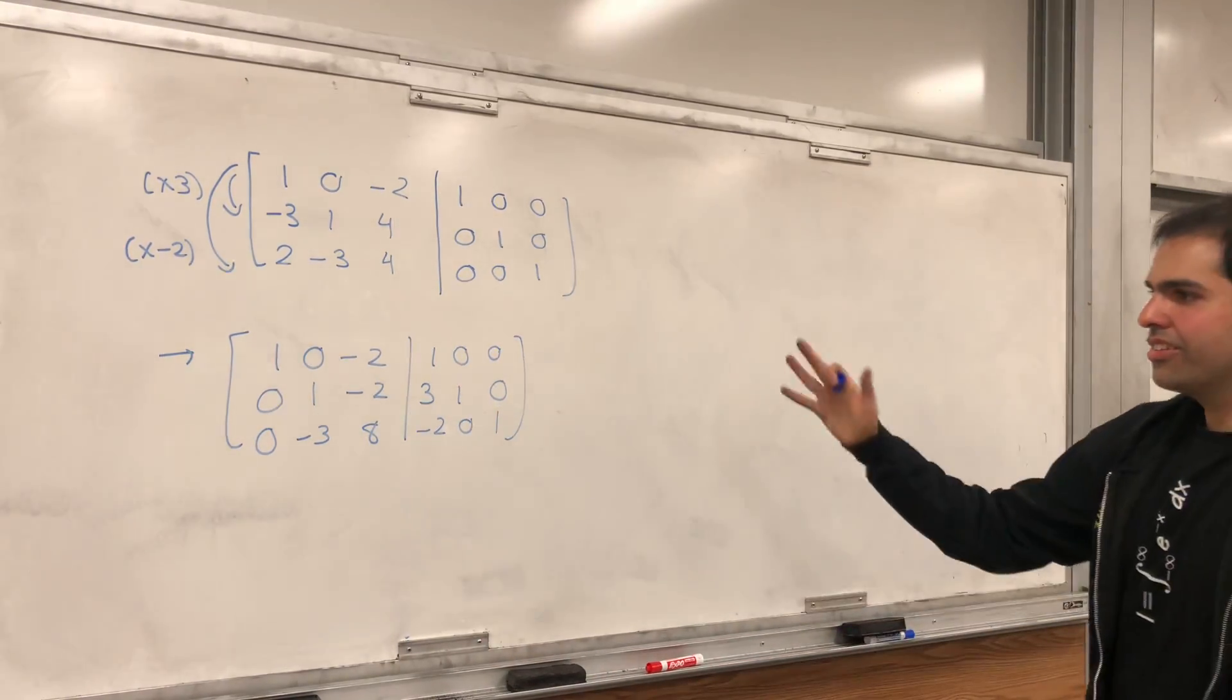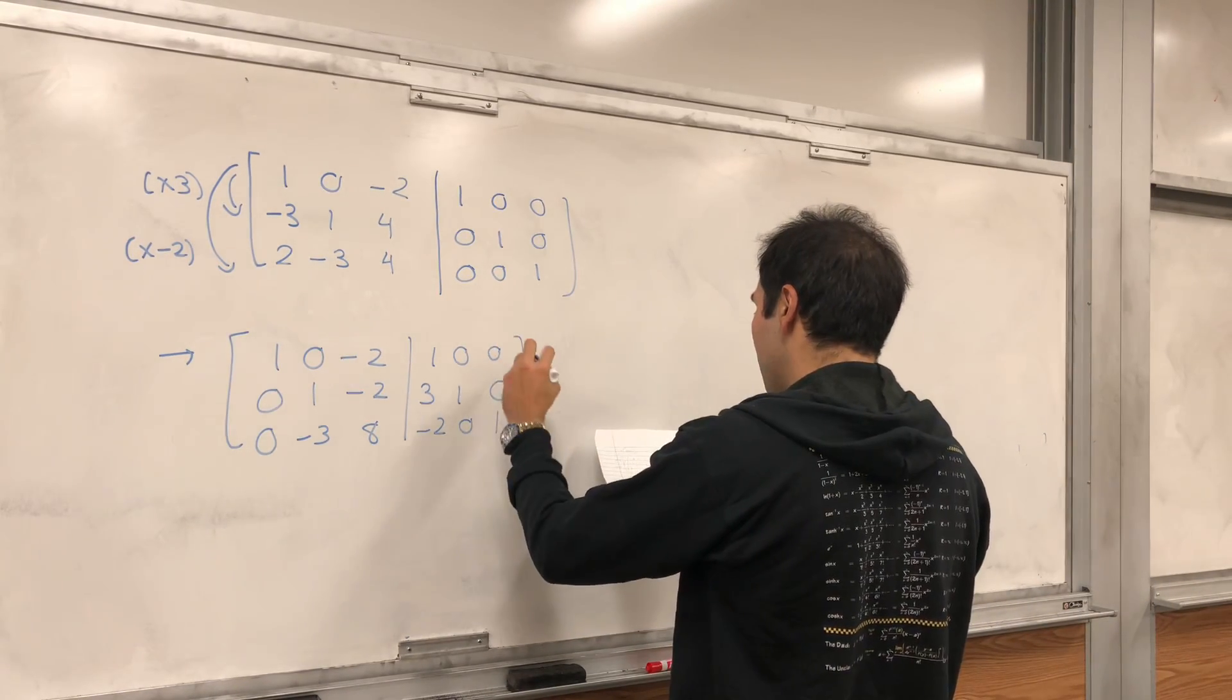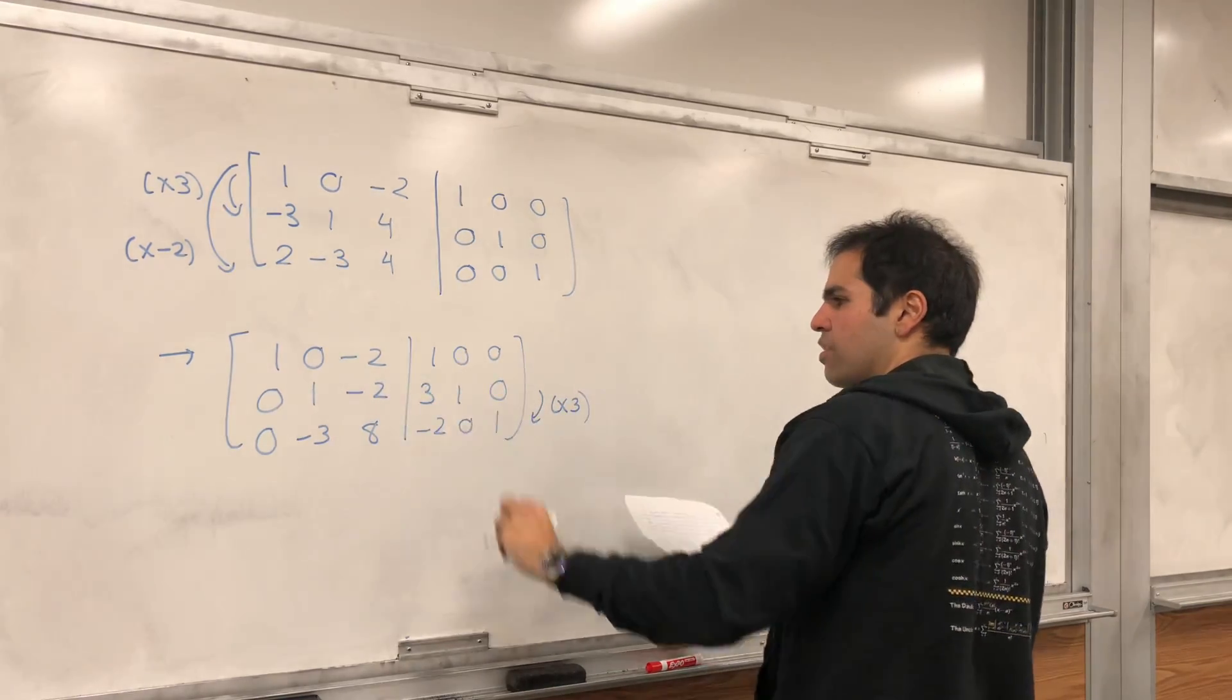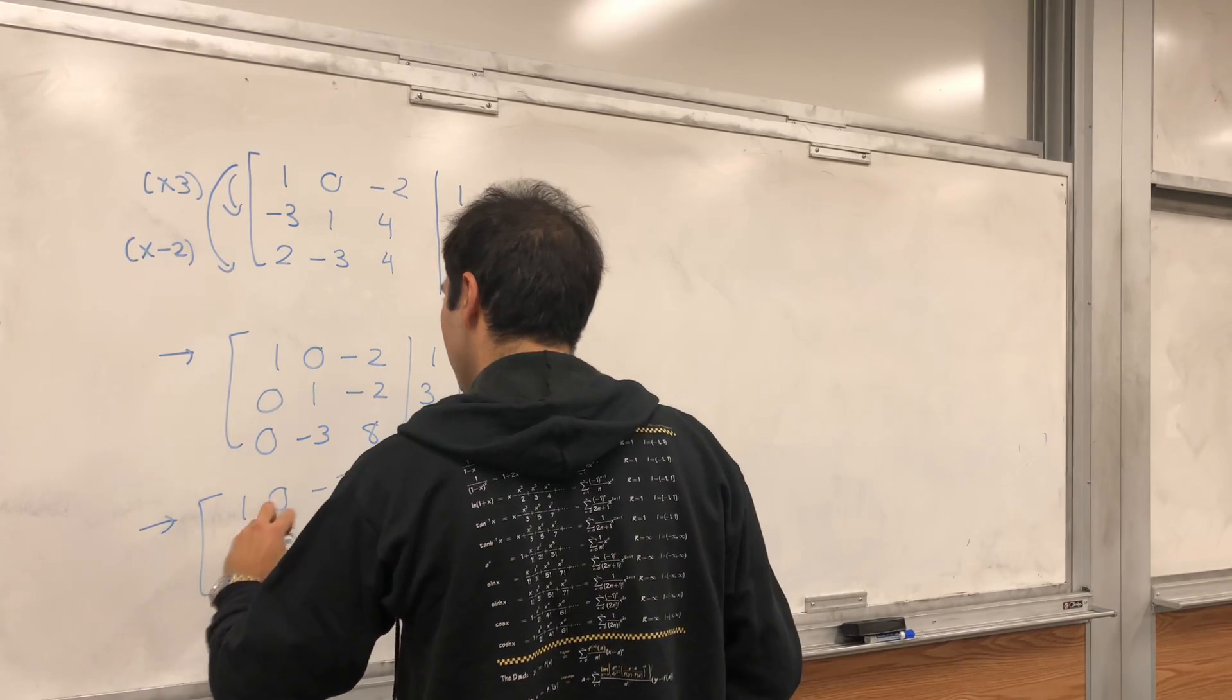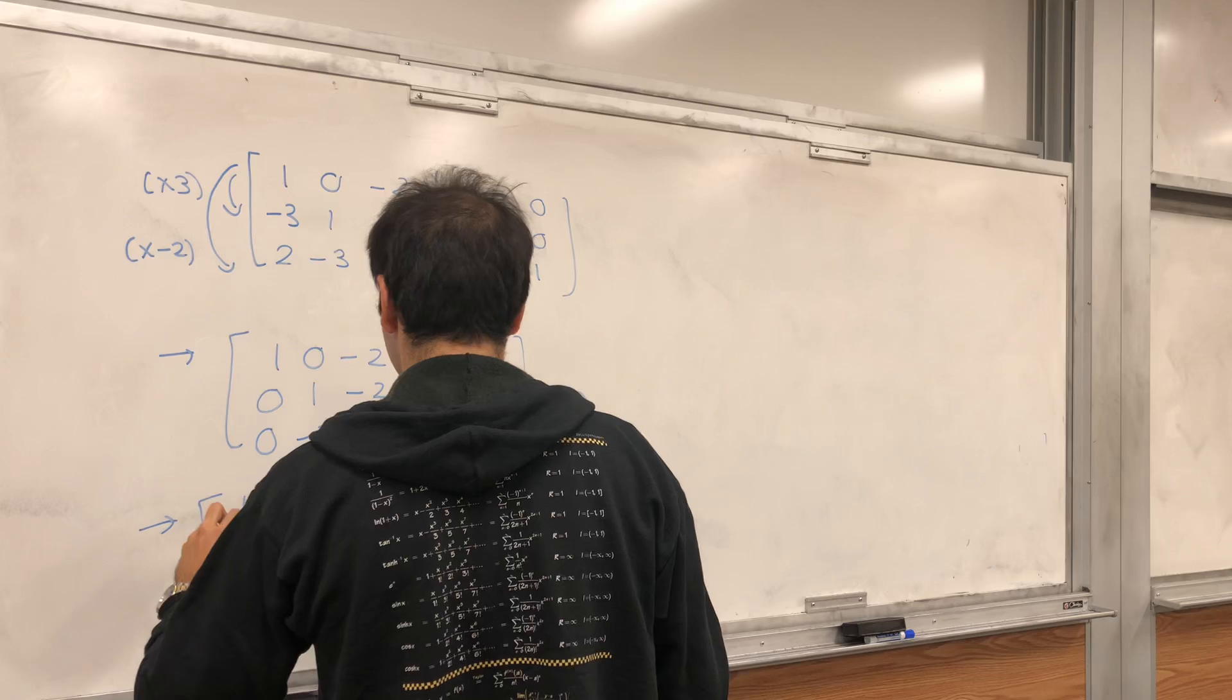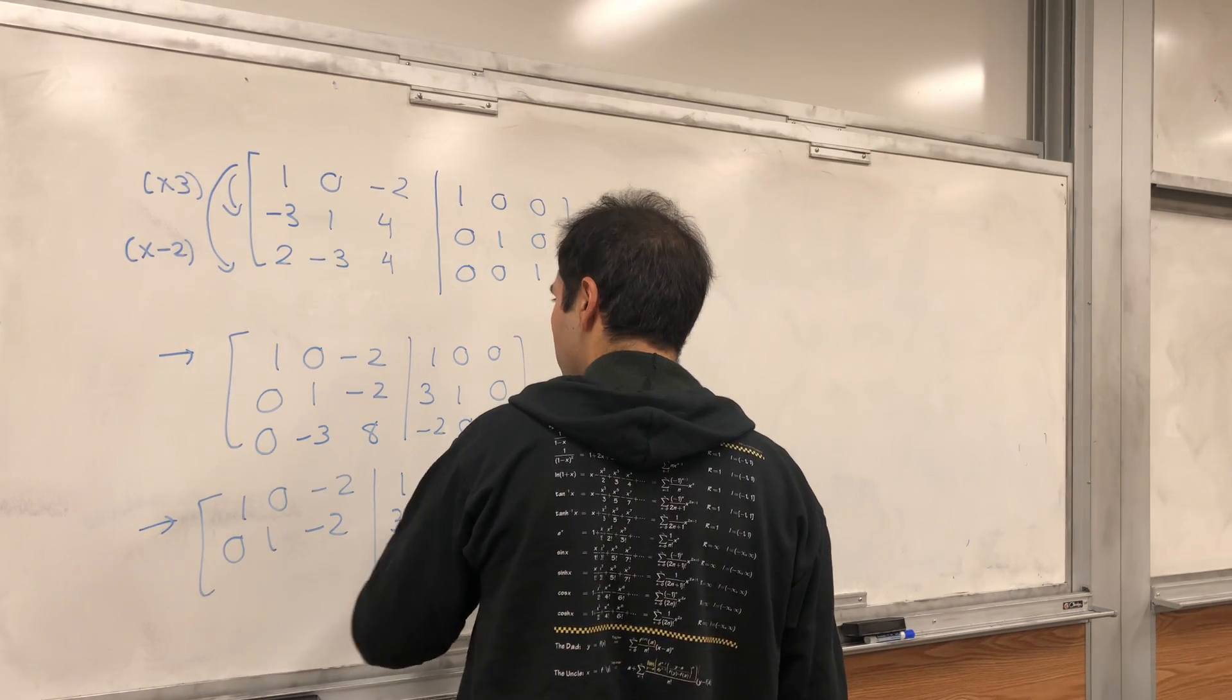So that's good. So again, keep track of your multiplications. And then another thing we can do, we can add 3 times the second row to the third row. So we get 1, 0, minus 2, and then 1, 0, 0, and then 0, 1, minus 2, 3, 1, 0,